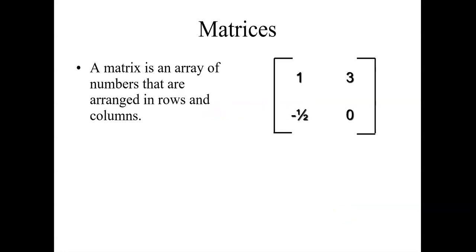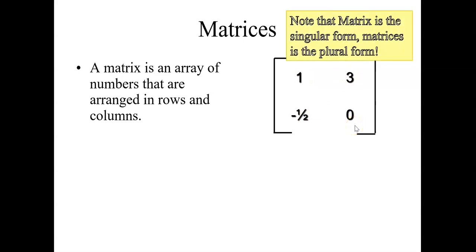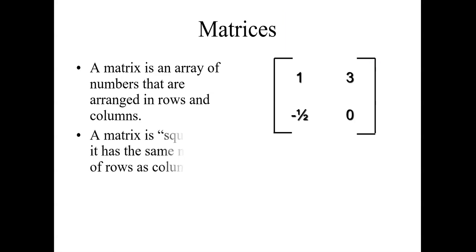What is a matrix? A matrix is an array of numbers that are arranged in rows and columns. The horizontal arrangement of elements is called rows and the vertical arrangement of elements is called columns. Note that matrix is the singular form and matrices is the plural form — so when you see the word matrix it means singular, and matrices means more than one matrix.